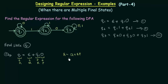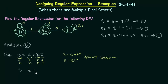Whenever you have an equation of the form r = q + r·p, it can be written as r = q·p* by Arden's theorem. So I can write q1 = ε·0*. Since from our identities ε·r = r, we have ε·0* = 0*. So the regular expression for final state q1 is 0*. Let this be equation number 4.